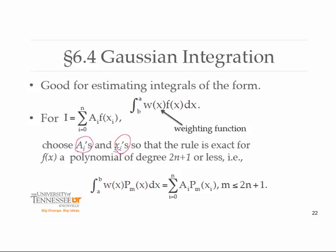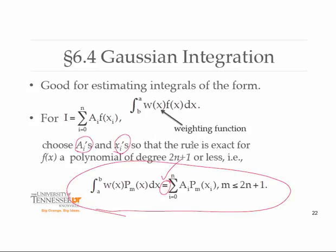Keep in mind we have n plus 1 abscissas. In that particular case, instead of an approximation sign we actually have equality: the integral of w times the function, which we're assuming is a polynomial of degree up to but not larger than 2n plus 1, would be equal to the summation of the weights and the abscissas evaluated at that polynomial.